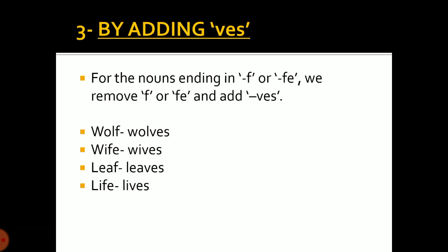The third rule is by adding ves to the singular noun. For all those nouns that end in f, such as wolf, or those that end in fe, such as wife, we remove the f or fe and add ves to make it plural. For example: the plural of wolf is wolves, the plural of wife is wives, the plural of leaf is leaves, and the plural of life is lives.